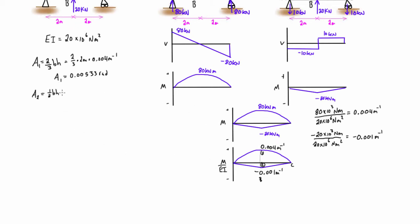And so then when we use the first moment area theorem to basically just sum up the areas between B and C on the M over EI diagram, that's just equal to A1 plus A2. And if we add those together, we get 0.00433 radians. And because it's positive, that's indicating that our angle is up like that from the horizontal at point C.